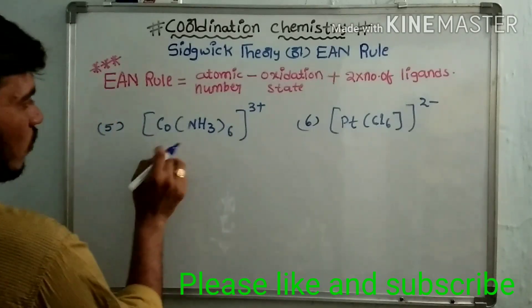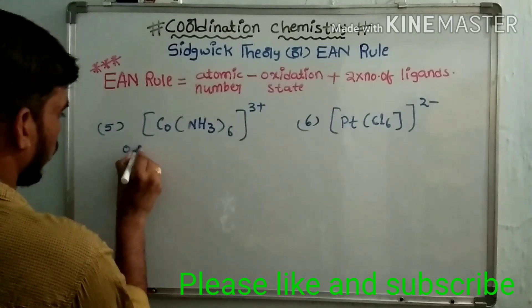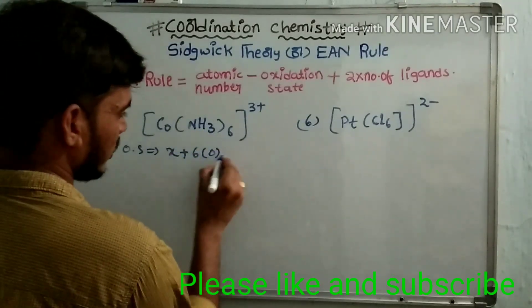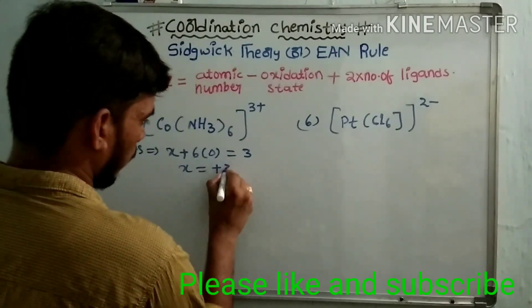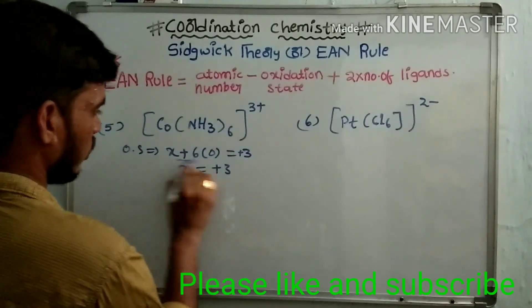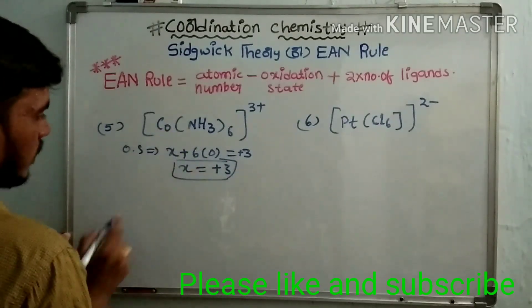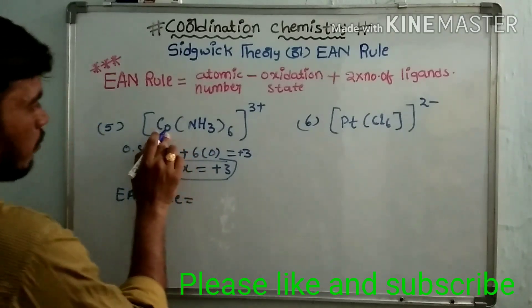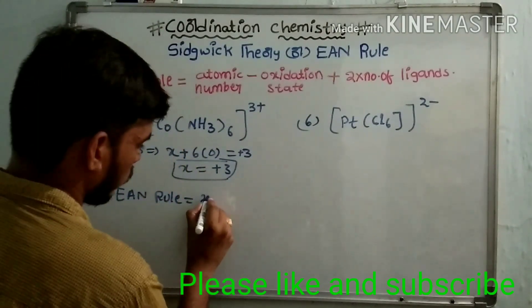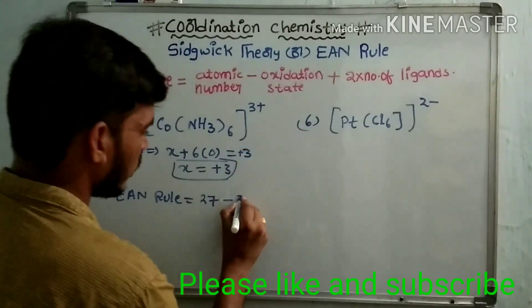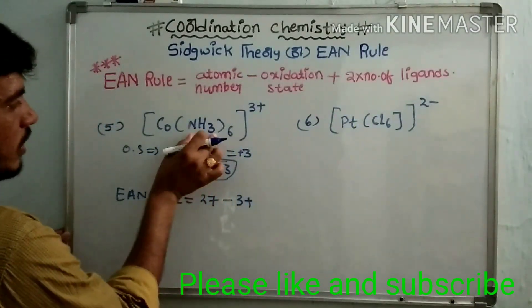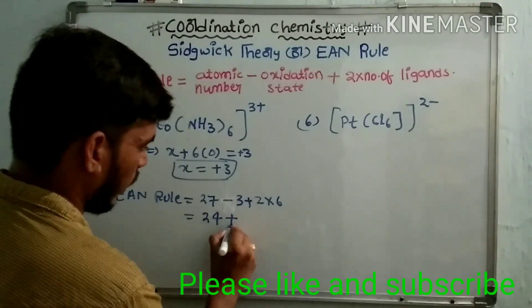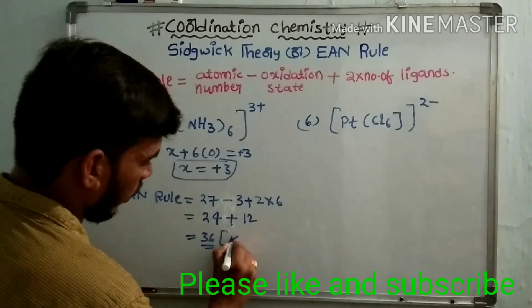Another example is Co(NH₃)₆³⁺. First, we find the oxidation state of cobalt: x equals plus three. The EAN value is: atomic number of cobalt is 27, EAN = 27 − 3 + 2 × 6 = 24 + 12 = 36. This value is nearest to krypton, so this complex is more stable.